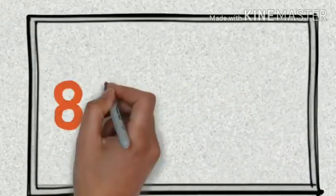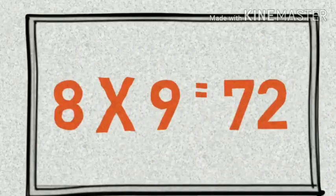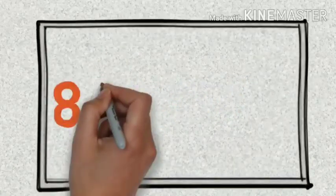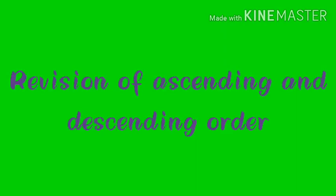56, eight eights are 64, eight nines are 72, eight tens are 80. Next is revision of ascending and descending order.